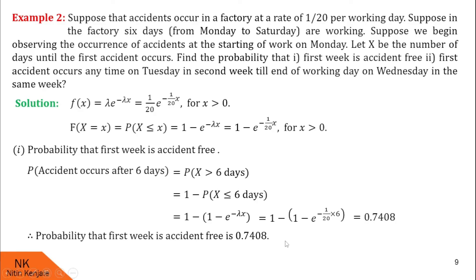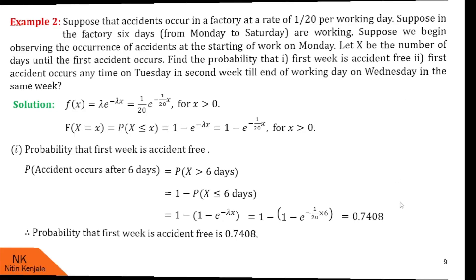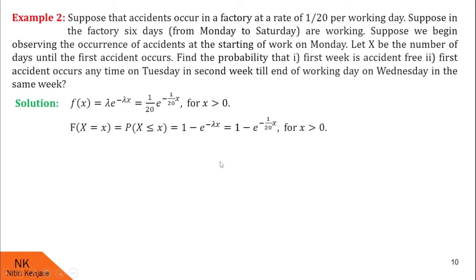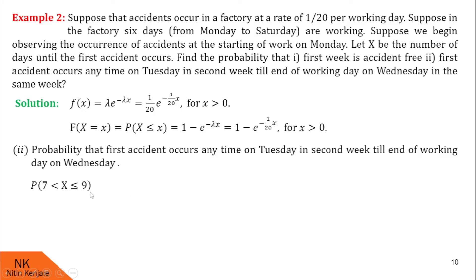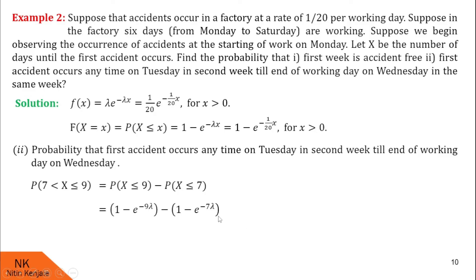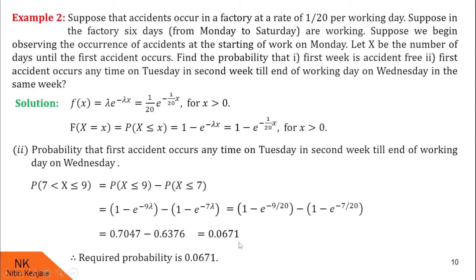Now we calculate the probability that the first accident occurs anytime on Tuesday of the second week till the end of the working day on Wednesday of the same week. This is P(7 < X ≤ 9), which equals P(X ≤ 9) − P(X ≤ 7). Using the CDF formula with lambda = 1/20, after substituting lambda and simplifying, we find P(7 < X ≤ 9) = 0.0671. So the required probability is 0.0671.